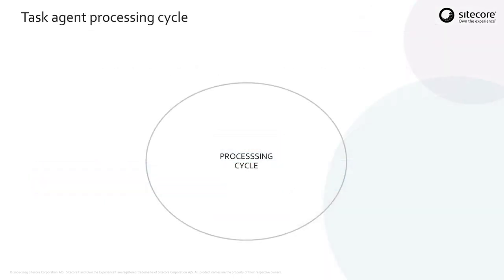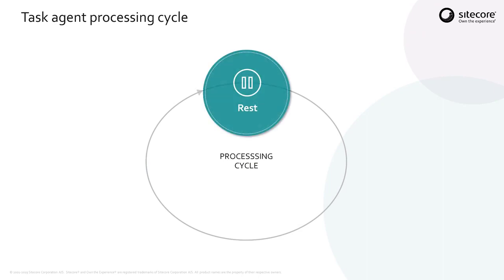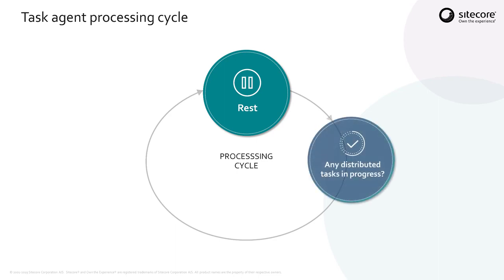A task agent has a particular processing cycle. It will start off at rest. When it wakes up, the first thing it will do is check if there are any distributed tasks currently in progress, and if there are, it will join in, assuming that the data source supports splitting and allows additional agents to join in.